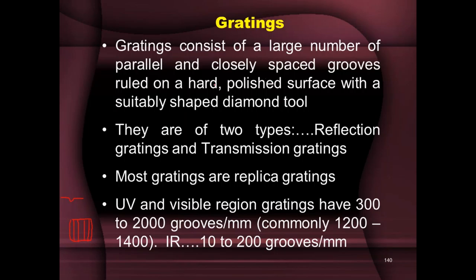This polished surface is for one type of grating called the reflective grating. If it is a transmission grating, the surface is transparent rather than polished. So gratings are of two types: reflection gratings and transmission gratings. Most gratings used in instruments are replica gratings because master gratings are very expensive. The cost of the instrument would go up drastically. So to avoid that, replica gratings — duplications of the master grating — are used.